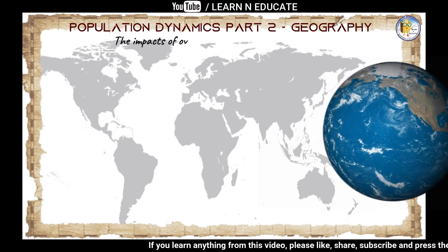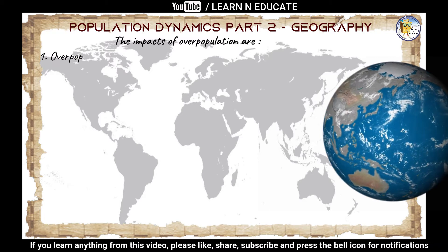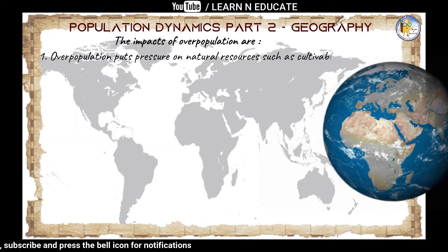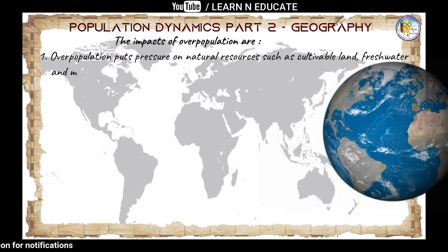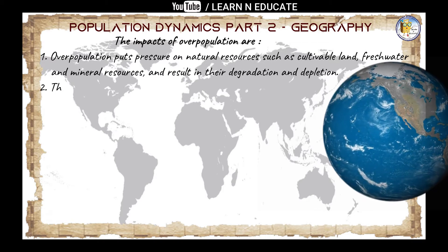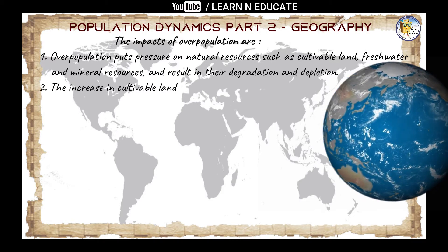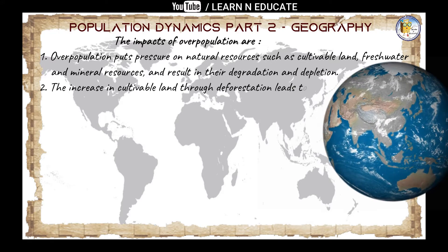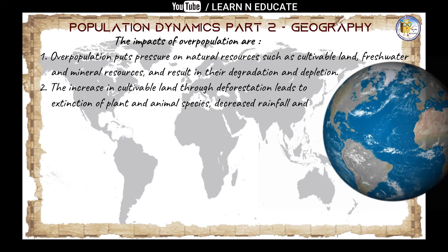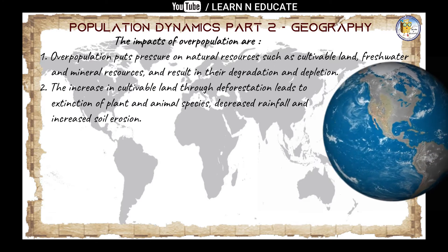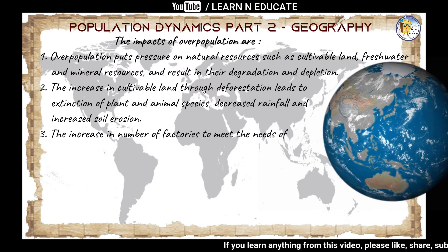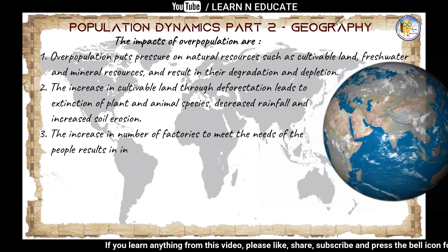Now let's see the impacts of overpopulation. First, overpopulation puts pressure on natural resources such as cultivable land, fresh water, and mineral resources, resulting in their degradation and depletion. More people need more land, more water, and more mineral resources, causing natural resources to start depleting. Additionally, the increase in cultivable land through deforestation leads to extinction of plant and animal species, decreased rainfall, and increased soil erosion.